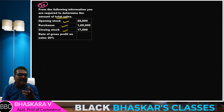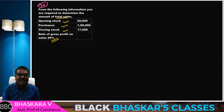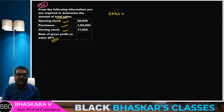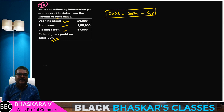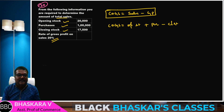GP amount is given, sales amount is not given. So to find this, recall the formula from last session. Cost of goods sold equals — as discussed in parts 1 and 2 — cost of goods sold equals sales minus GP. And cost of goods sold also equals opening stock plus purchases minus closing stock, plus direct expenses.